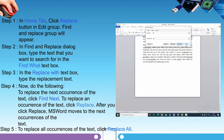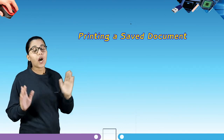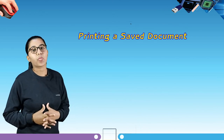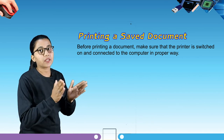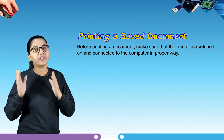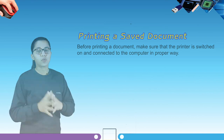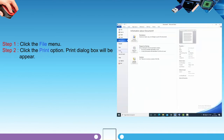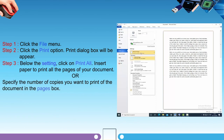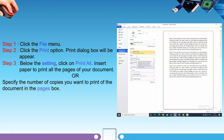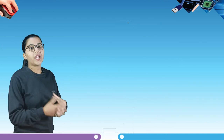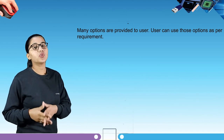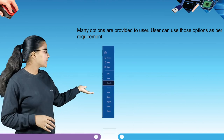Let's jump to our next topic — printing a saved document. Before printing, make sure the printer is switched on and connected to the computer properly. Follow these steps: Step one — click on the File menu. Step two — click the Print option; the Print dialog box will appear. Step three — below the settings, click Print All, and specify the number of copies you want in the pages box. Step four — click the Print button. Many options are provided to the user, who can use them as per requirement. You can see the formatting options in this picture.